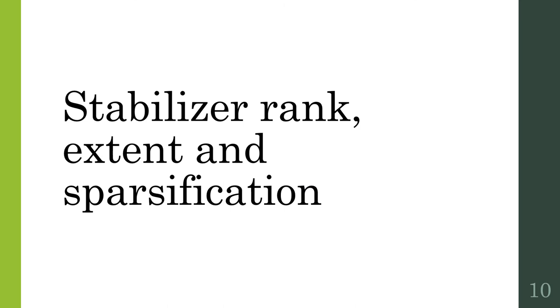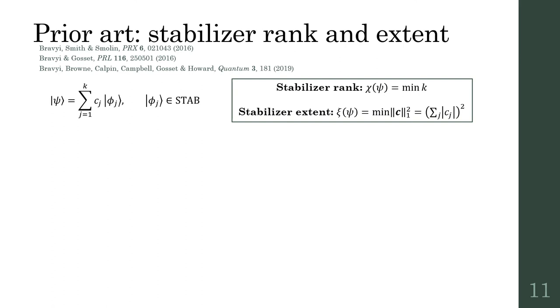I'm now going to turn to stabilizer rank methods. Previously, these methods have been confined to pure states. The central idea is that any pure state can be written as a superposition of stabilizer states. There are many stabilizer bases, so there are many ways to do this, and the terms need not be orthogonal. Stabilizer rank is the smallest number of terms needed to write such a superposition for a given state. Stabilizer extent instead minimizes the L1 norm squared. Extent can be computed using convex optimization, but stabilizer rank is hard to compute, and decompositions can have a very large number of terms.